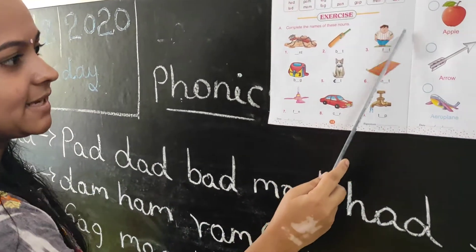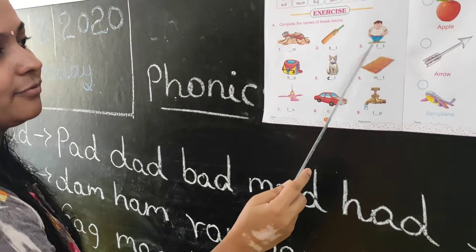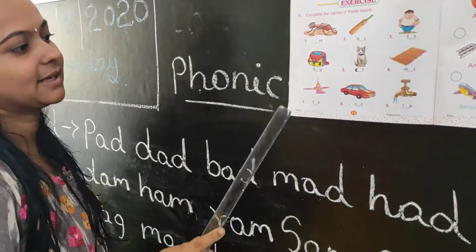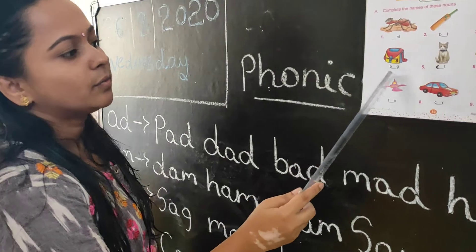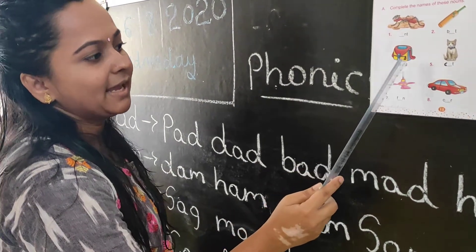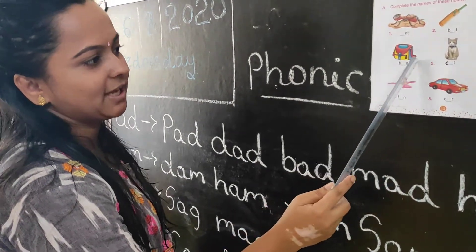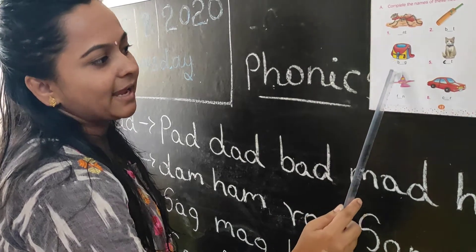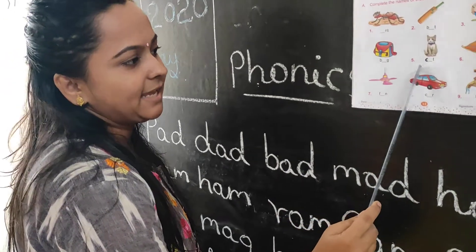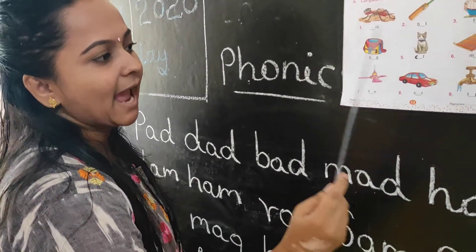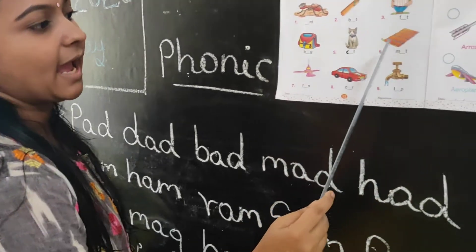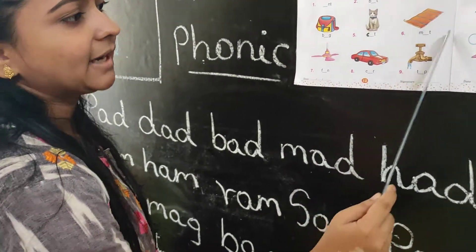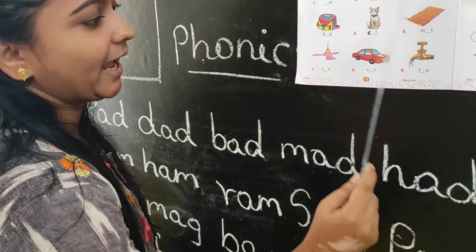What is this? Fat. F-A-T, fat. Bag. B-A-G, bag. You fill in dash A. C-A-T, cat. M-A-T, mat. You fill in dash A.